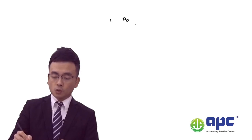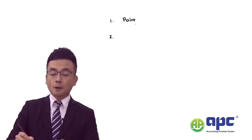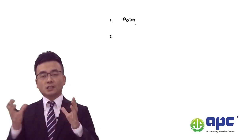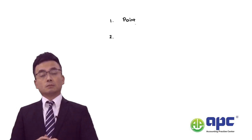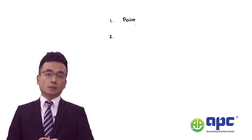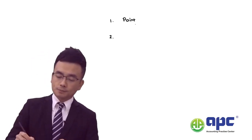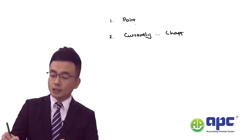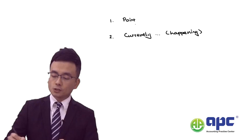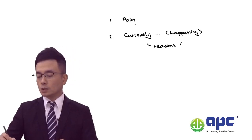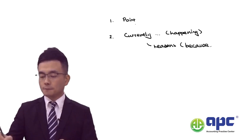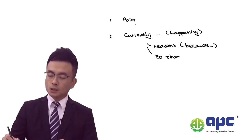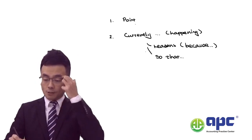One very important exam technique to always bear in mind in the APM: first, raise your point of what is going on, then follow it with 'because' and 'so that'. What is easier to understand is this framework: 'Currently, what is happening in the case' — and 'this is why we need to change' — then the reasons behind it using the word 'because', which markers love to see, or 'so that' when talking about implications or the risk of doing that.